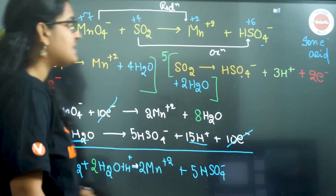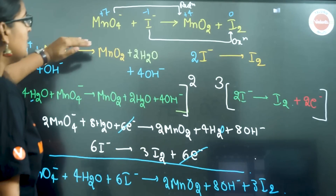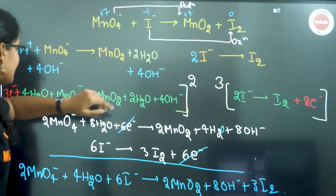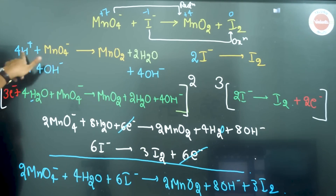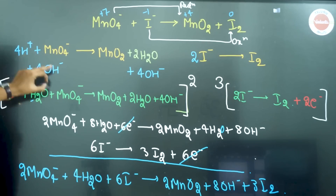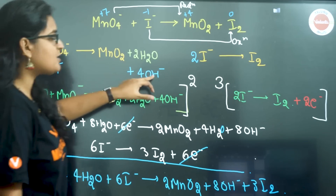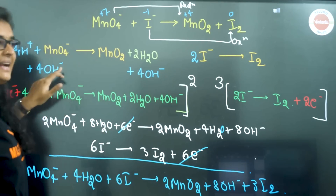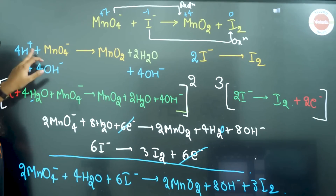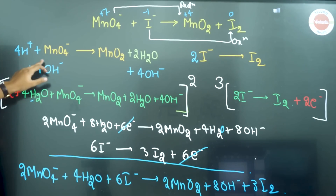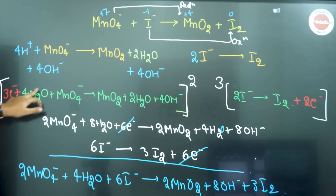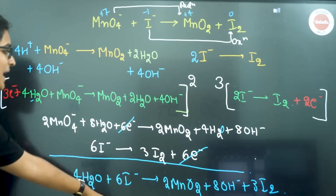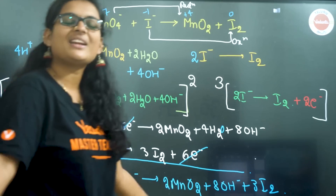Now let's convert to basic medium. We add the same number of OH− — in this case 4 OH− — to both the left-hand side and the right-hand side. Then H+ and OH− combine to form water molecules. Finally, you add those two reactions and you get your answer.